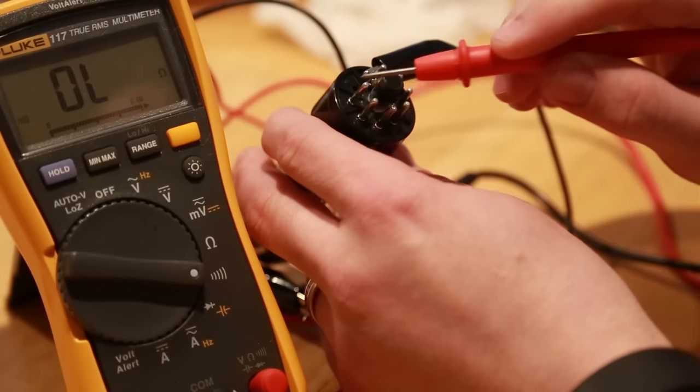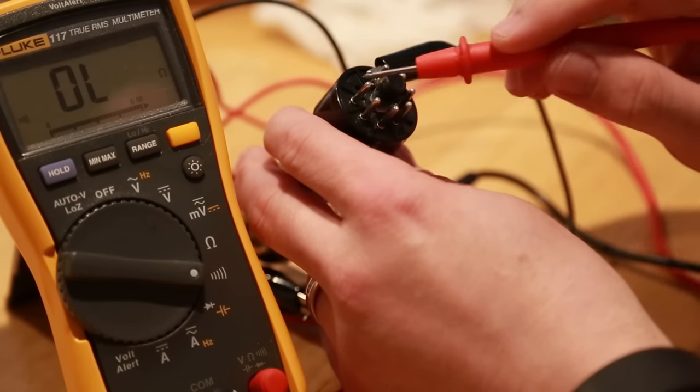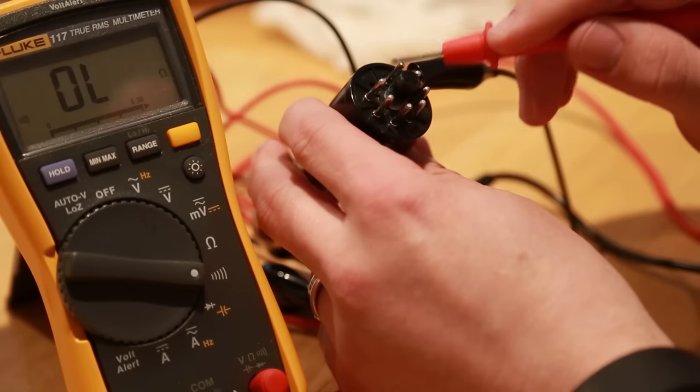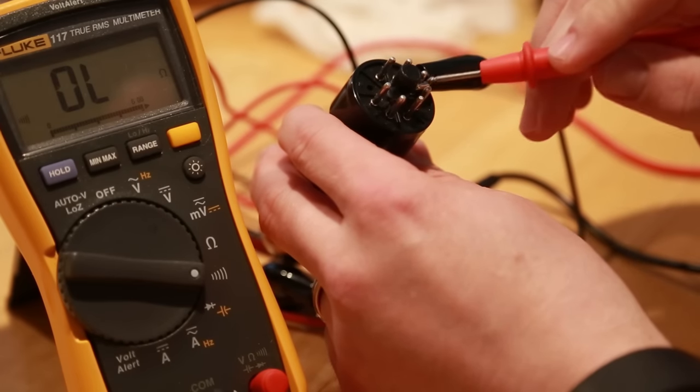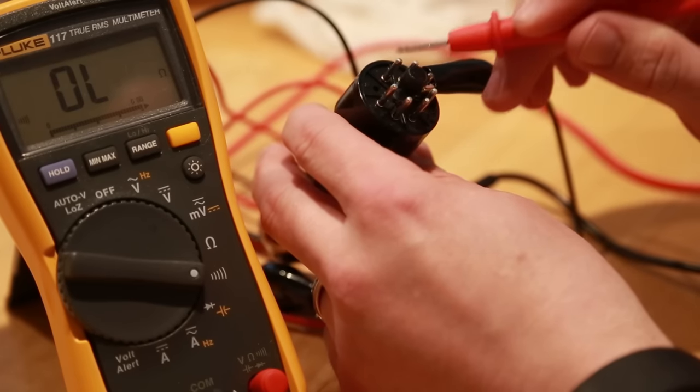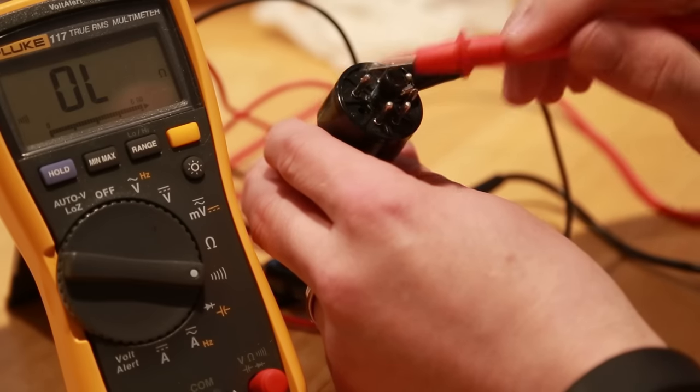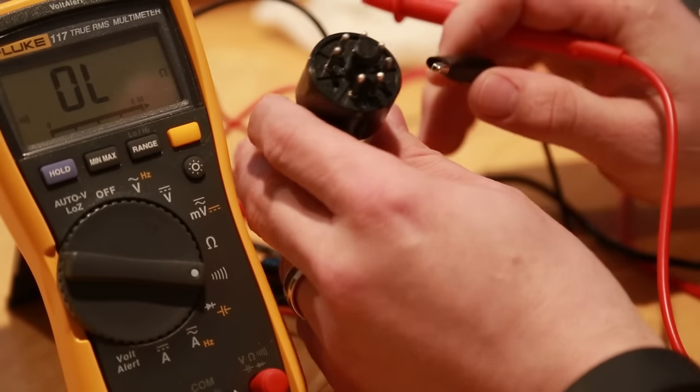You should also test all of the other pins because I should not have continuity on those. You can also go through a daisy chaining process of testing all of the pins to make sure no other continuity happens except on those that are supposed to, like the heater pins. Now I've done the rest of this one so I don't need to show it all to you, but here is the bigger problem with one that I had recently.